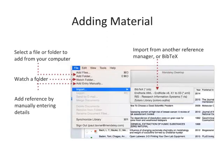Mendeley also offers a number of other options for adding material to your library. You can find these by opening the File menu. You can choose to add individual files, or the contents of an entire folder by browsing to the relevant location on your computer. You can opt to 'watch' a folder, which will mean that Mendeley monitors that location for any new items being dropped into the folder. If it finds a new document, that document will be automatically added to your Mendeley library.